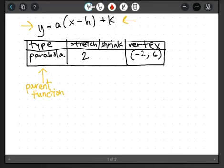And then you have your stretch or your shrink, right, which is your a value in the equation. And then you have your vertex or your origin, which is the h k value in your equation.